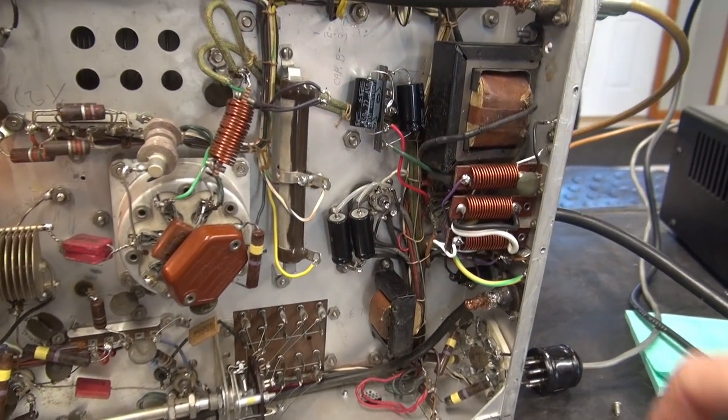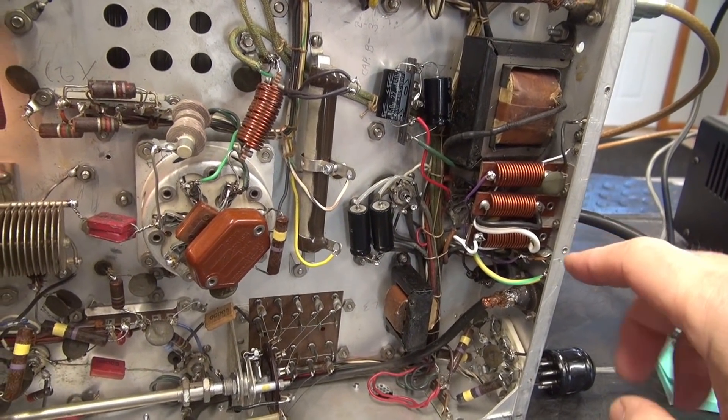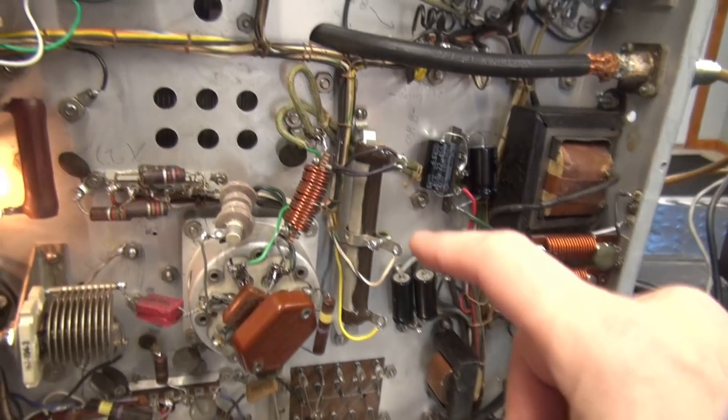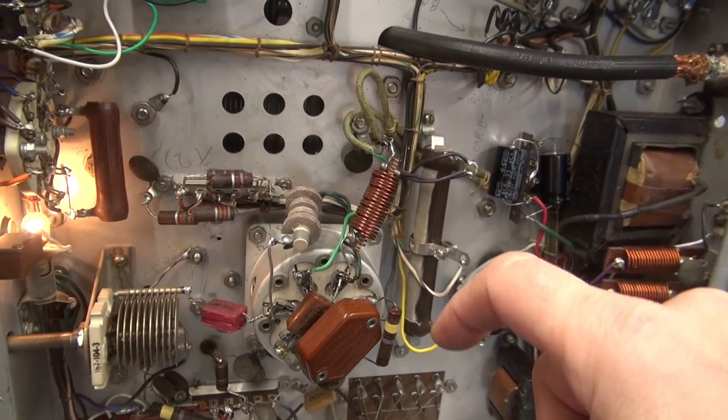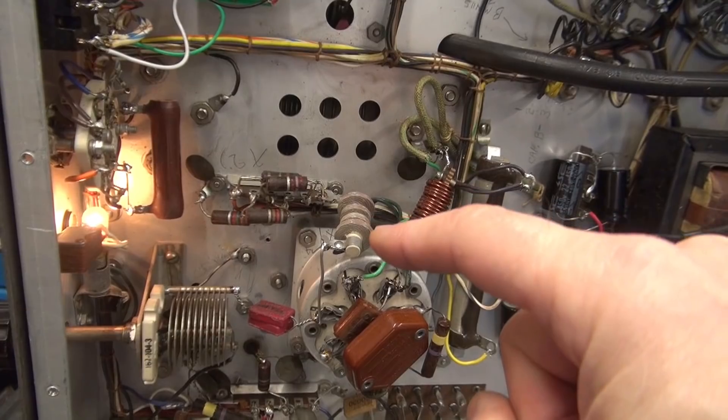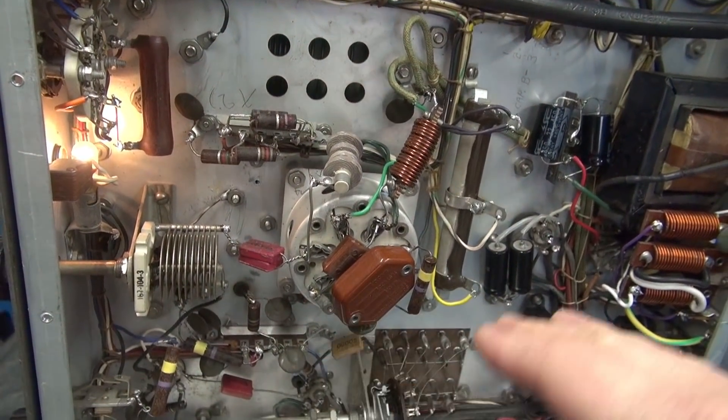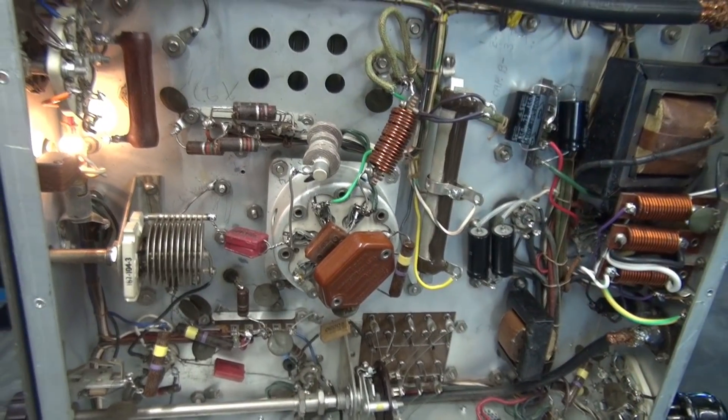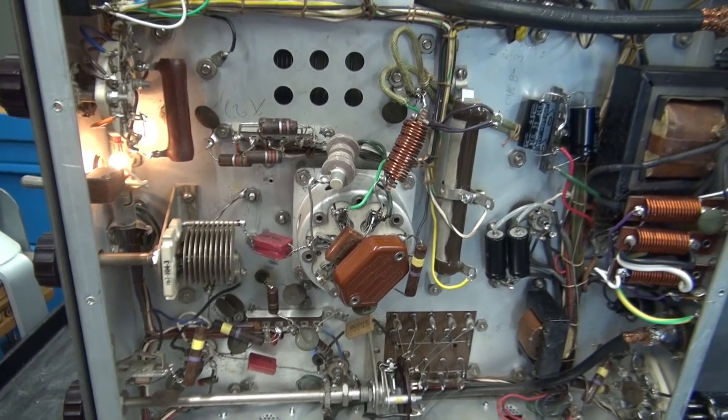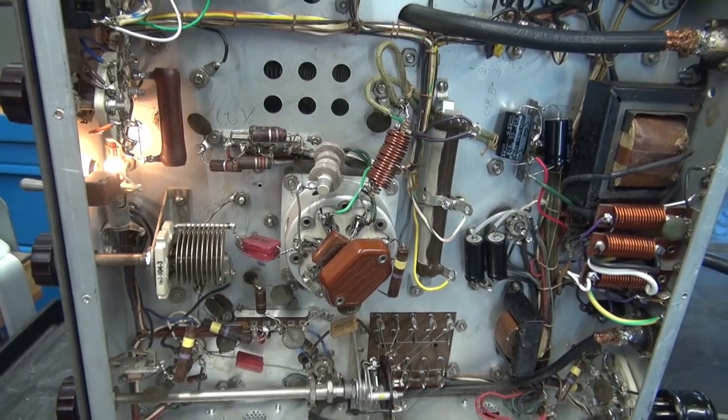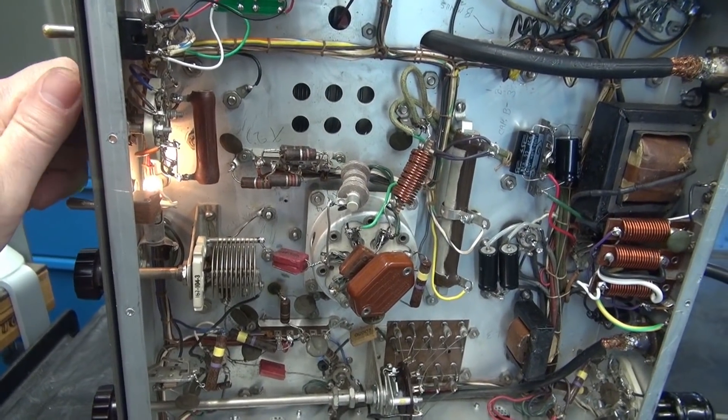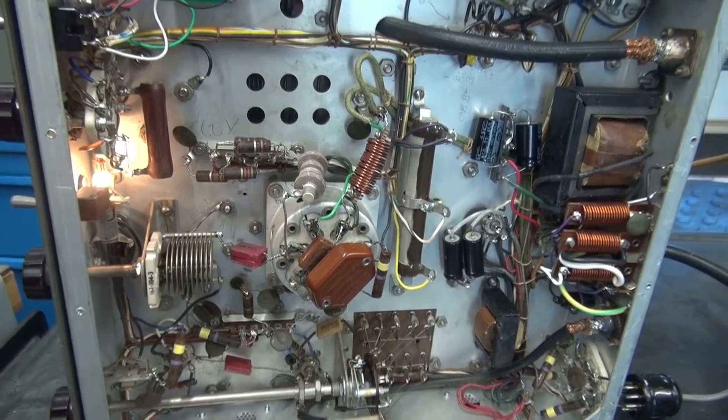So I added the AC input line filtering like the Viking 2 has. The choke is in place. I relocated this RFC choke that feeds the grid of the output tube. So all that is back to stock. So the question is, did that eliminate the buzz? So here we go. That's a big negatory.